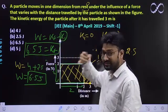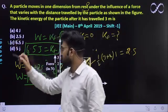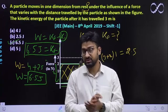So final kinetic energy must be equal to 6.5 since initial is already zero because it starts from rest. So C would be your correct option. I hope this question is clear to everyone. Thank you.